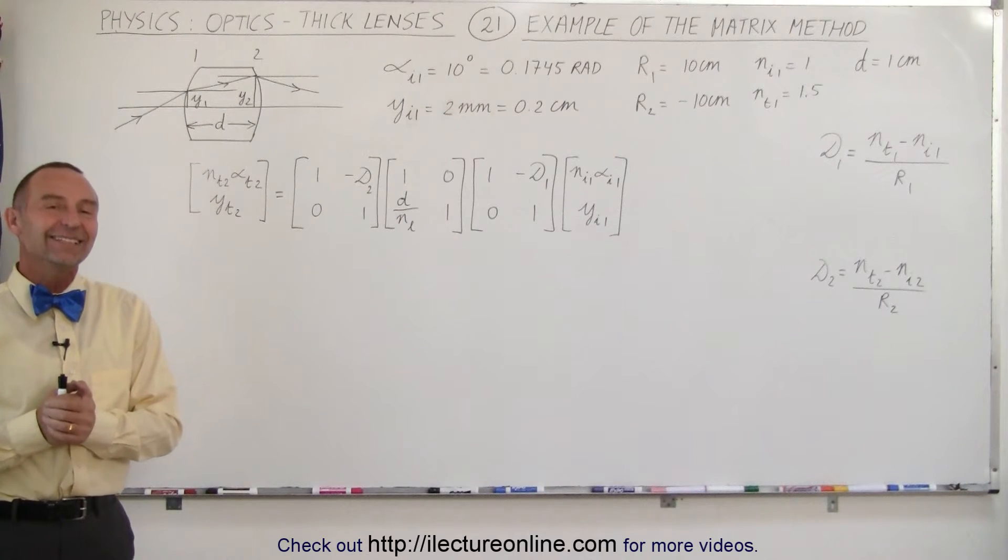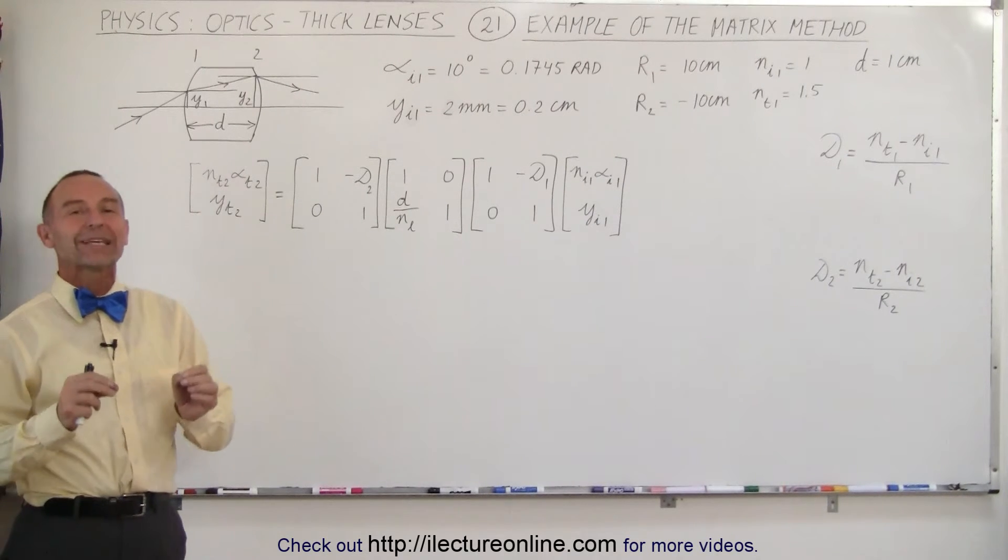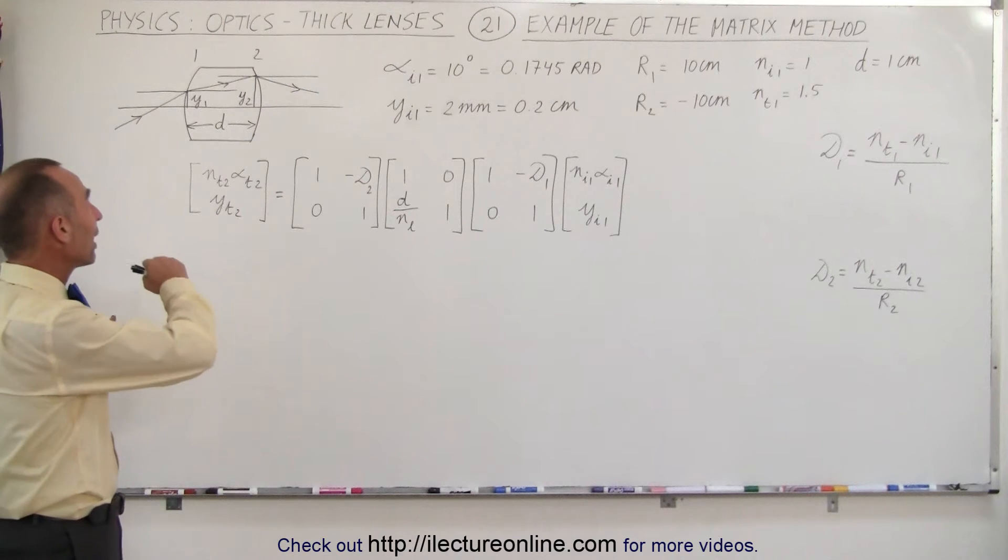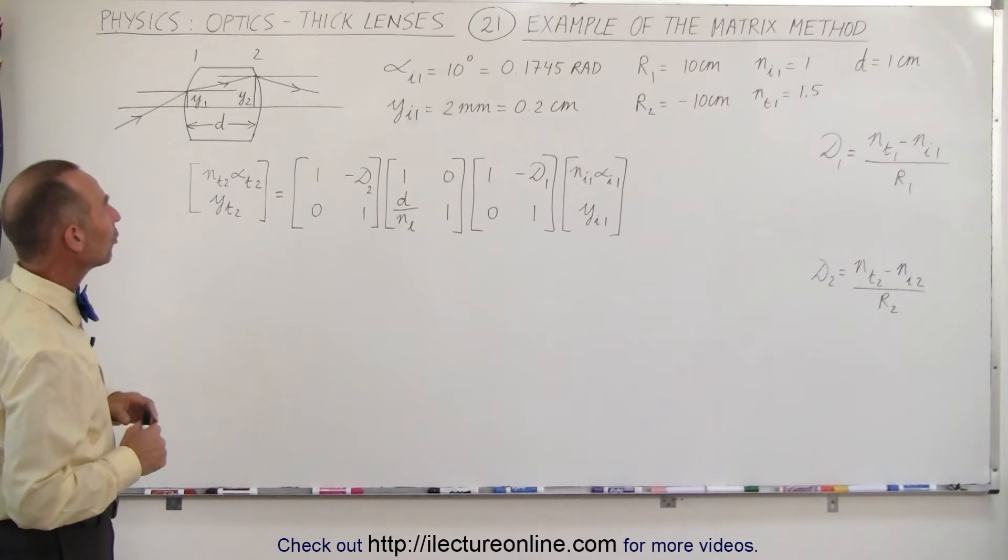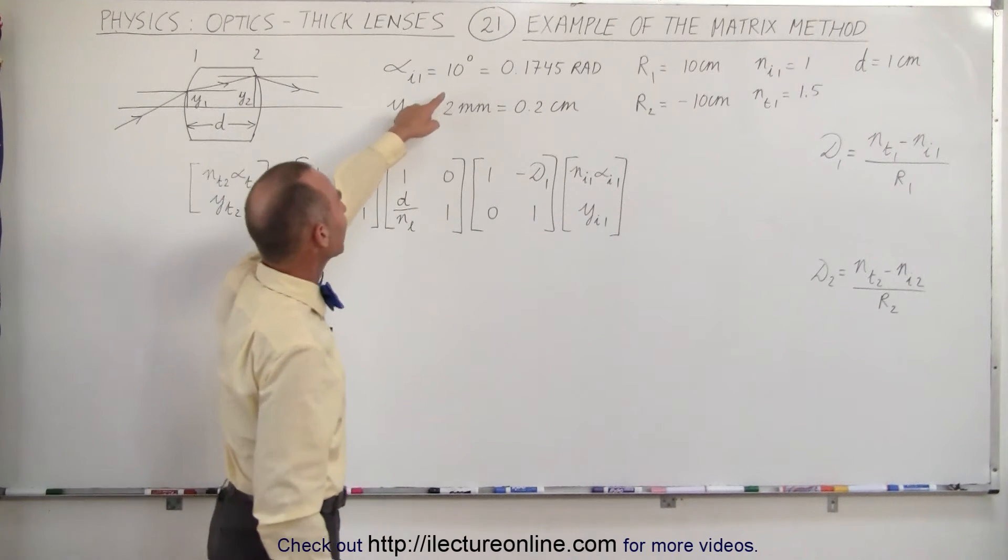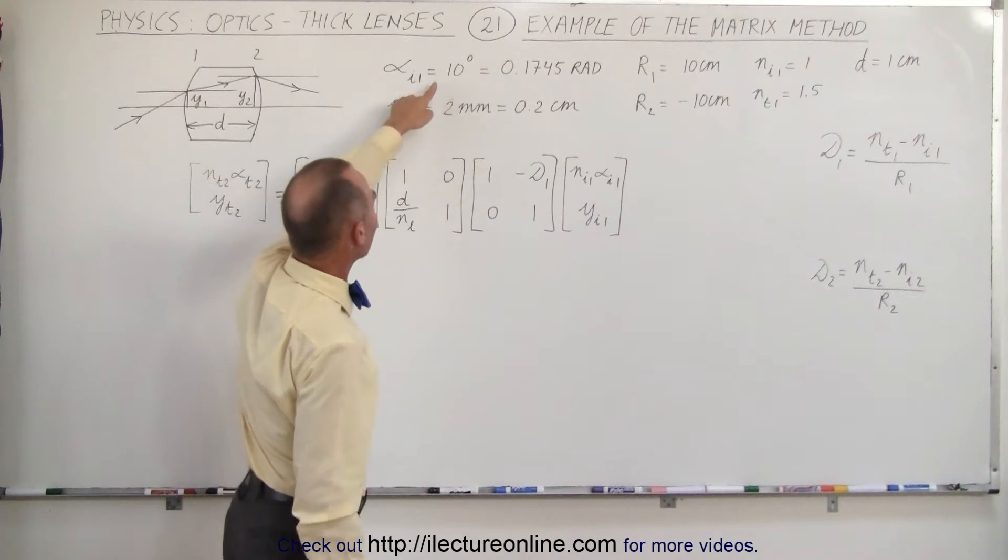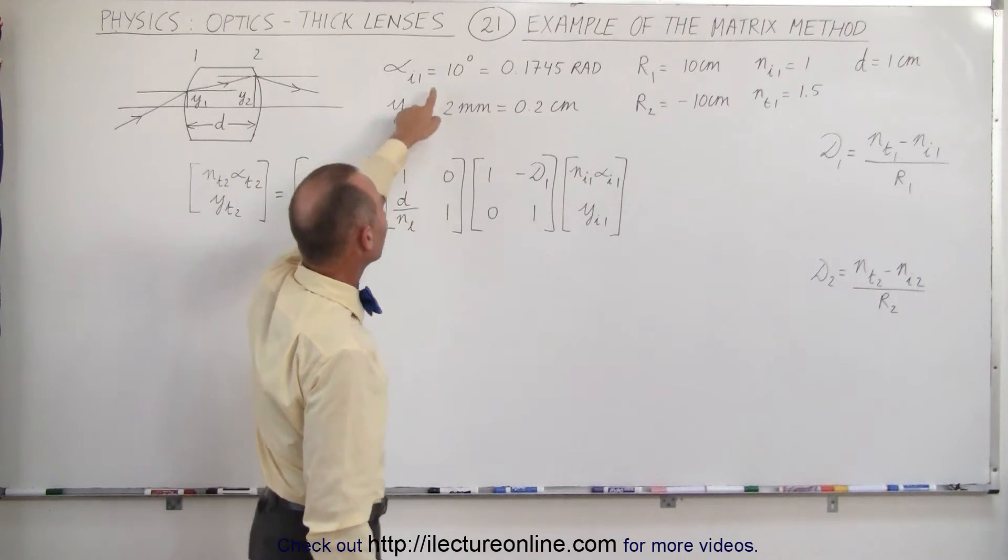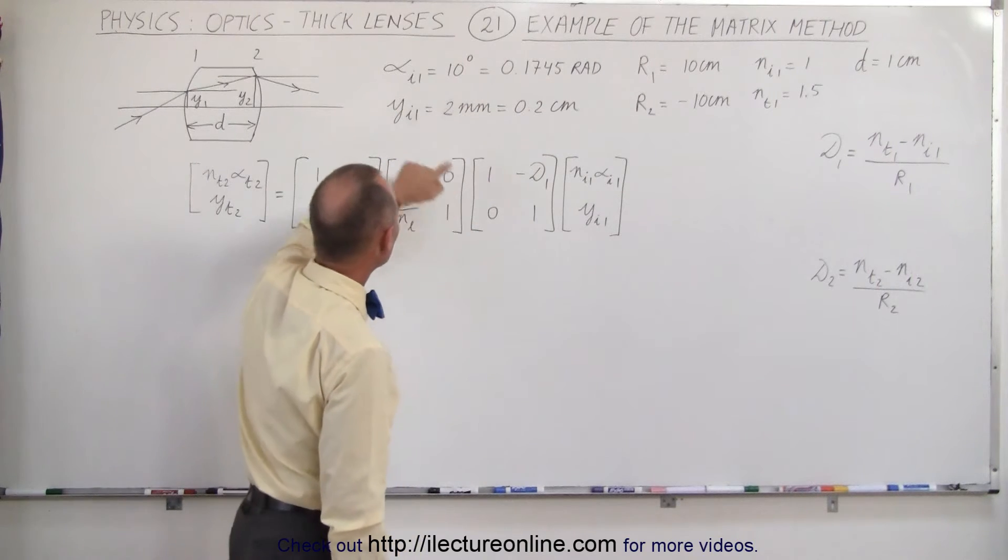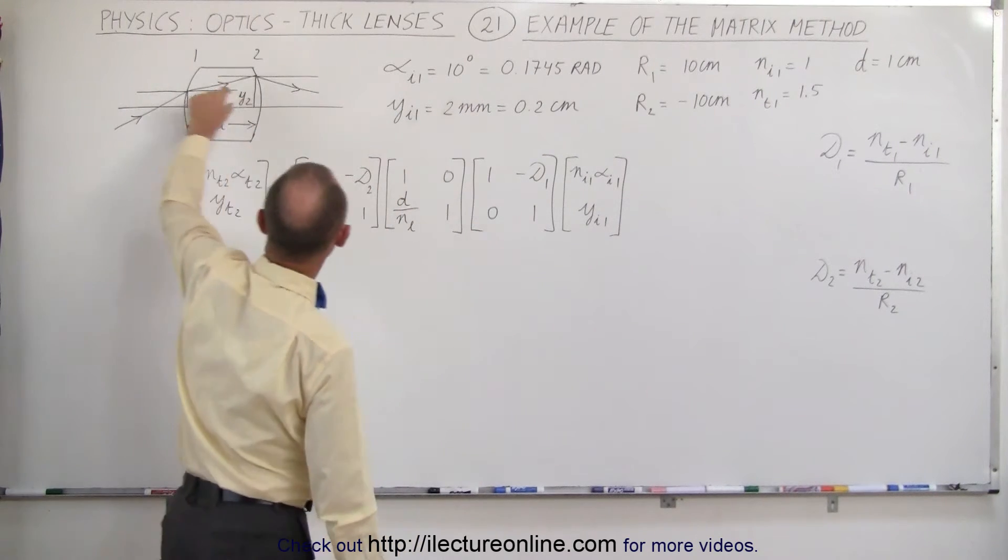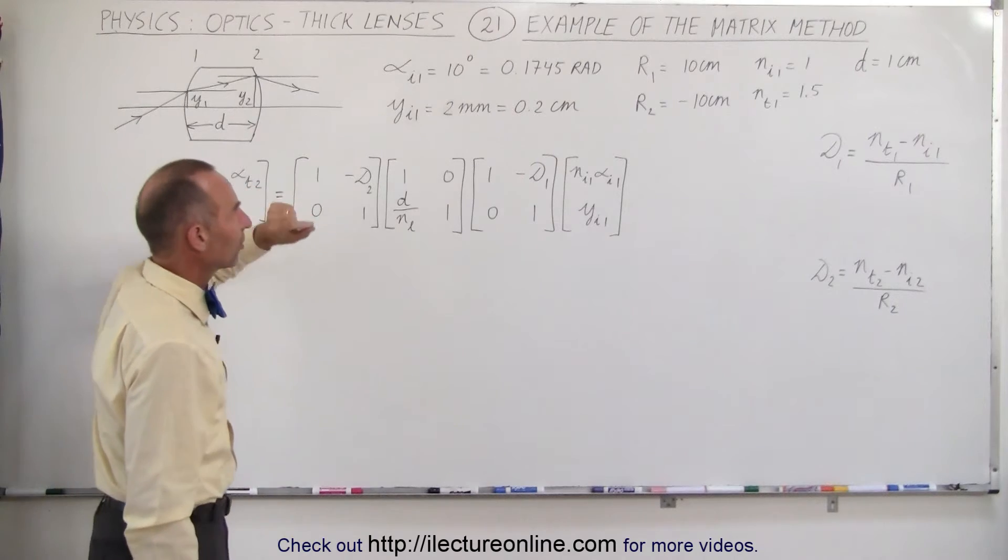Welcome to iElectronLine. Now we're ready to show you an example of how to trace a ray through a thick lens. Notice that we were given the information about the direction of the ray as it enters the lens, relative to the horizontal axis, that's converted into radians. We're also given the position 2mm above the optical axis.